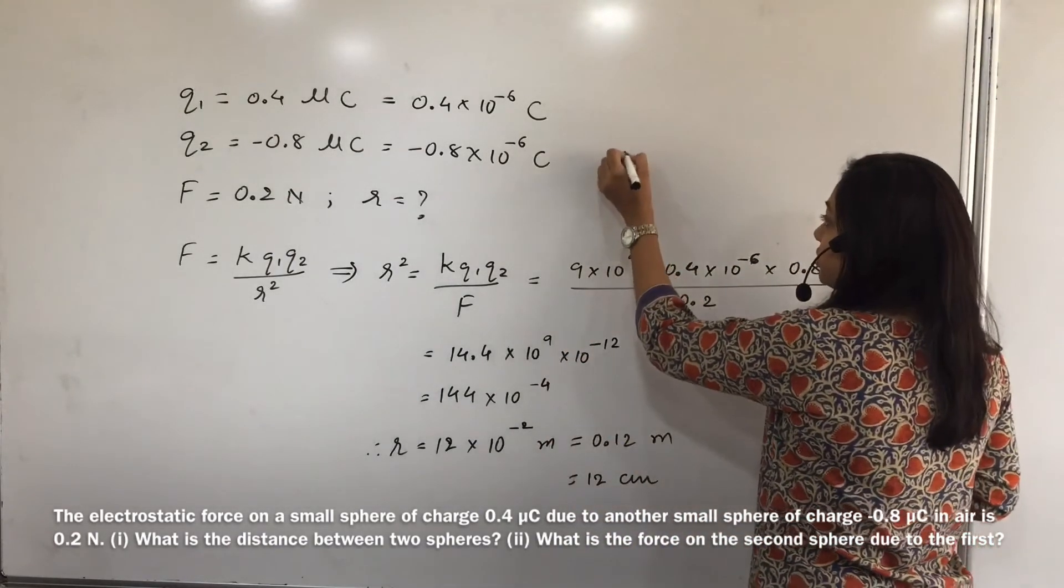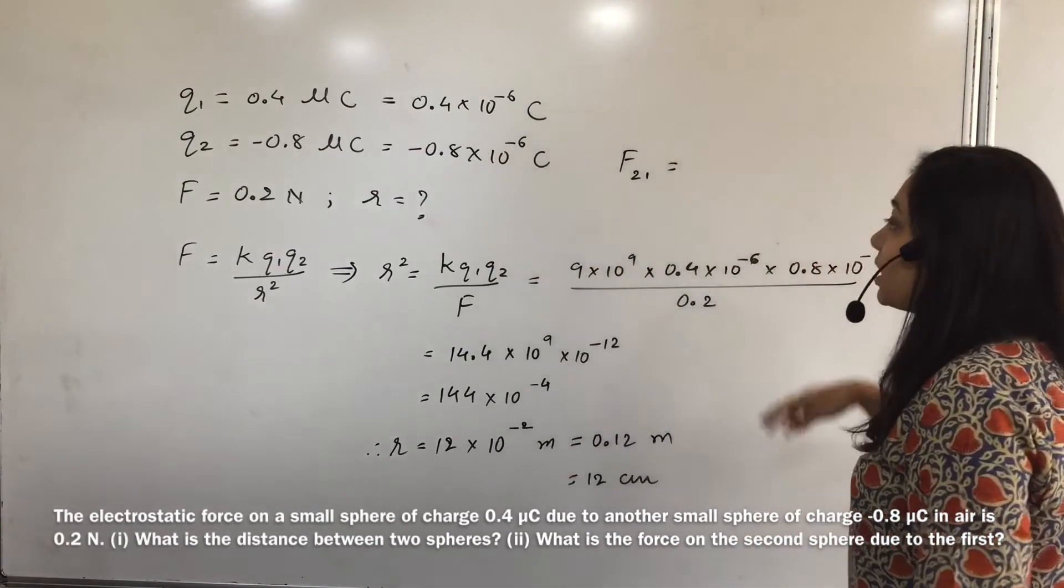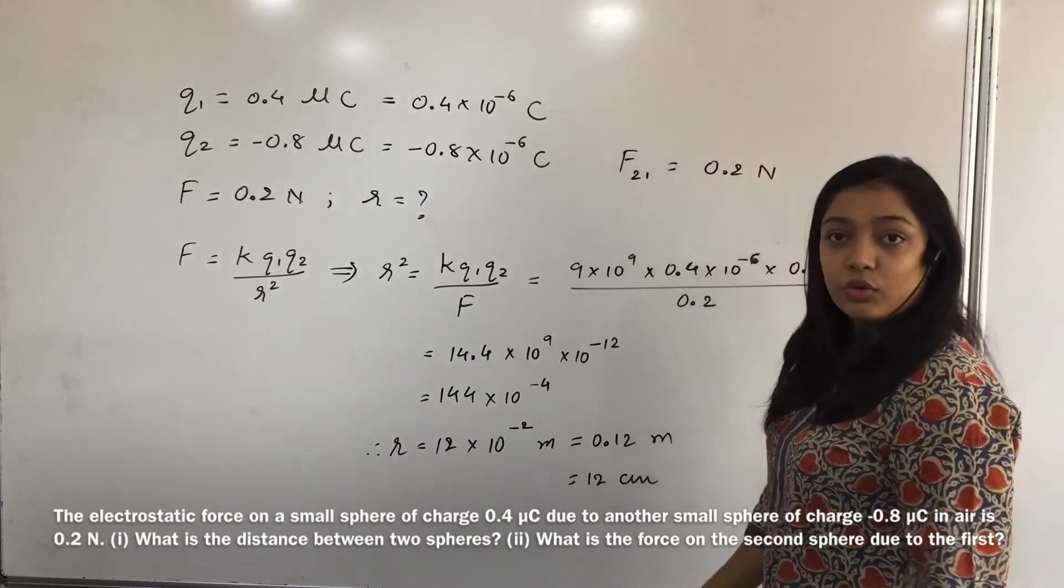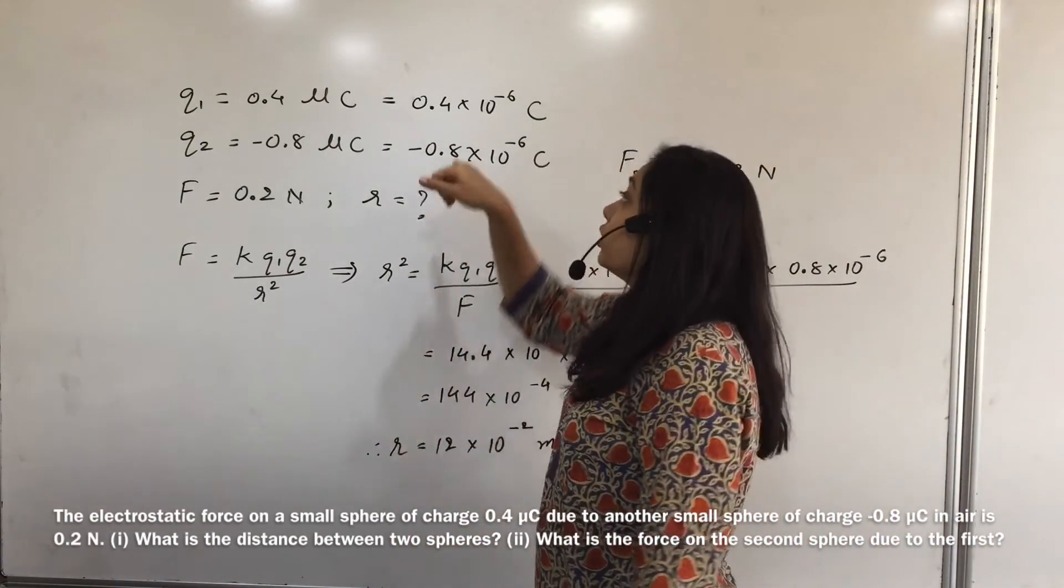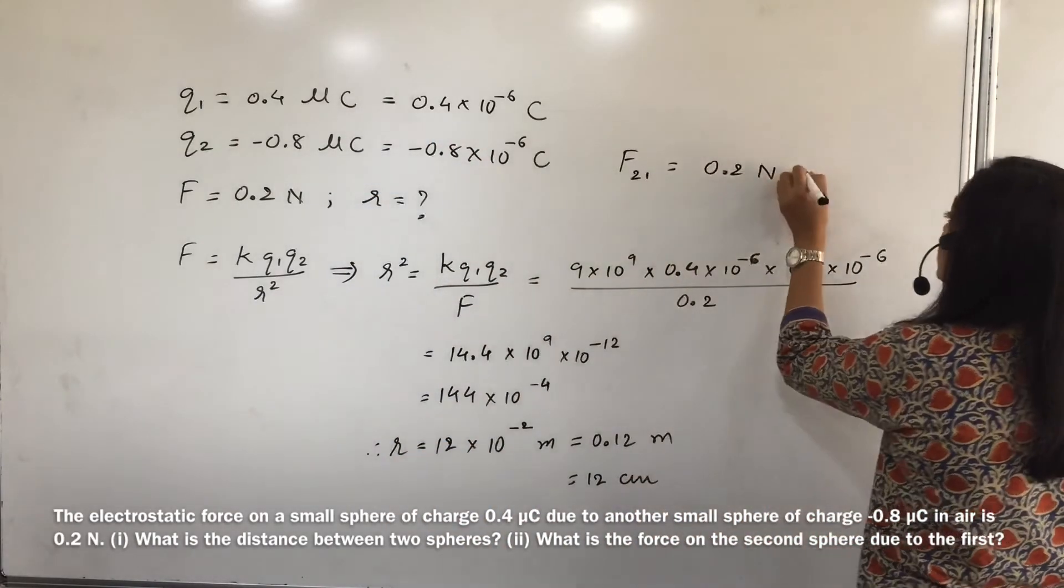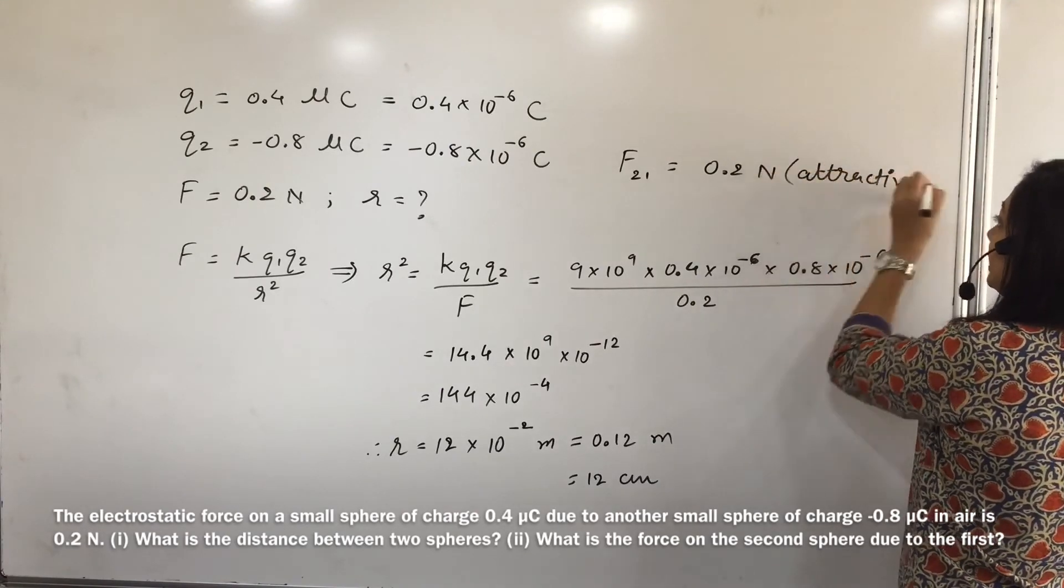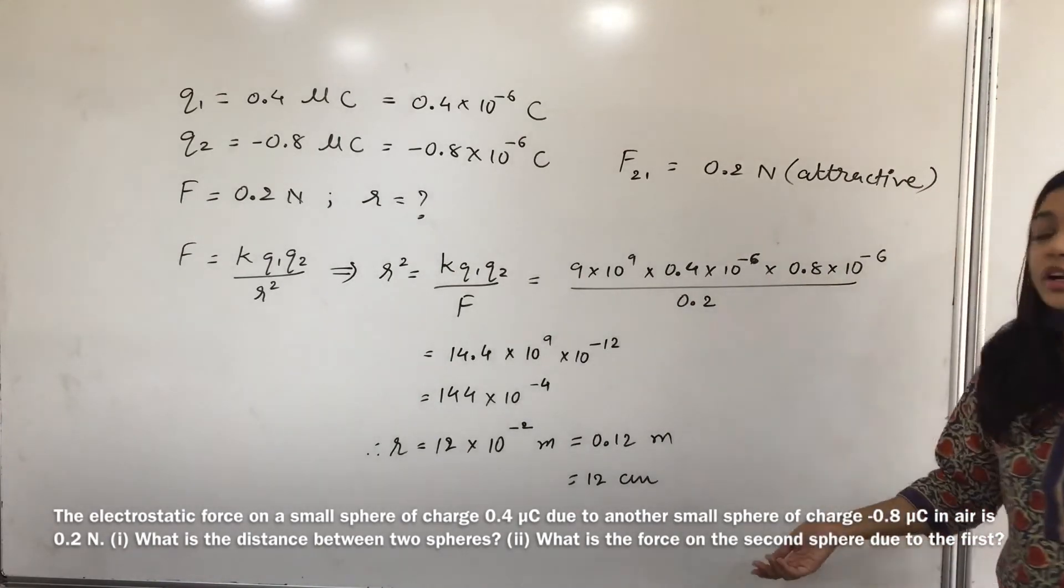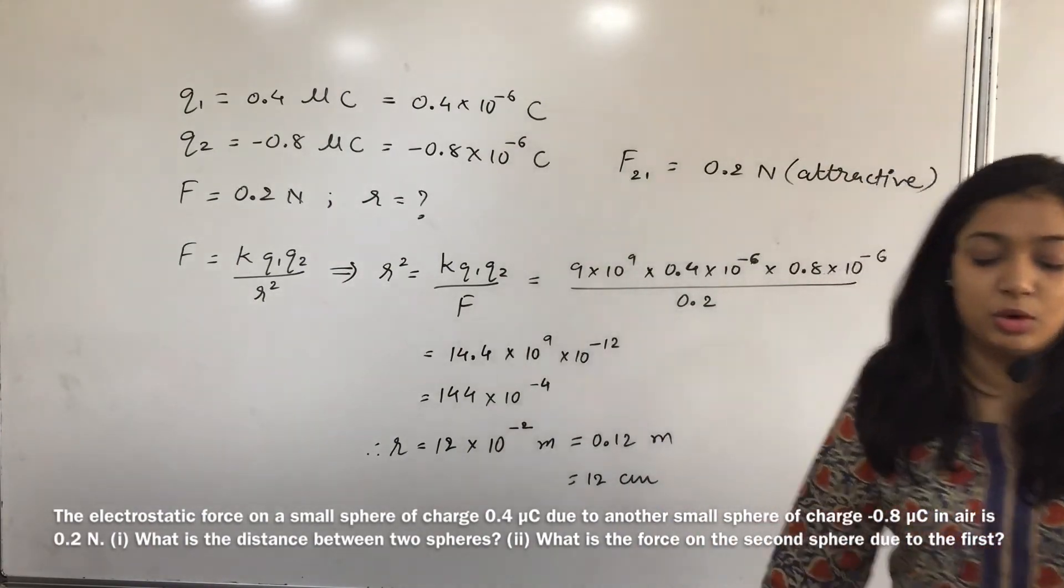Okay, now the force on two due to one is what? So the force is going to be 0.2 Newton only. Equal amount of force, right? And ab wo attractive hai repulsive hai ye kise pata chalega, right? To positive charge, negative charge, obviously this is going to attract. This is a type of force which is attractive. Clear everyone? To second sphere pe first sphere ki wajah se kitna force lag raha hai? Point two hi lag raha hai. Aur kaunse type ka lag raha hai force? So that is attractive force. Come on, write down.